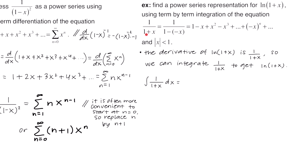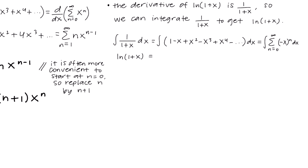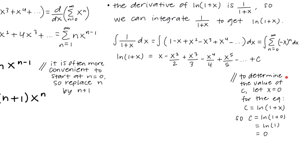We take the integral of 1 over 1 plus x, which equals ln of 1 plus x, and do term by term integration. The integral of 1 is x, the integral of negative x is negative x squared over 2, the integral of x squared is x cubed over 3. Since it's an indefinite integral we add an arbitrary constant c. To determine c, let x equal 0: we get c equals ln of 1 plus 0, which is ln of 1, which is 0. So c equals 0.